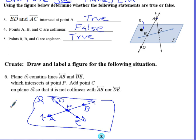And then it says, add point C on plane R so that it is not collinear with AB, nor DE. Basically, put a point anywhere in there so that it doesn't fall on the line. So, I'll put a point here. Alright.